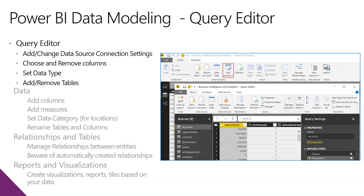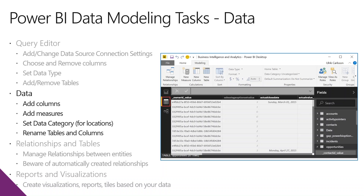You can also manipulate the data inside Power BI Desktop. First, you query your source data and prepare the columns in the query editor. Then once you've got your source data sorted out, you can add different columns, add different measures, set categories, rename tables and columns. This is transforming and cleaning the data.